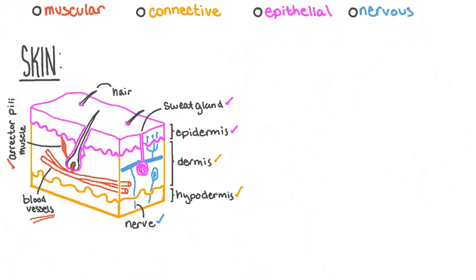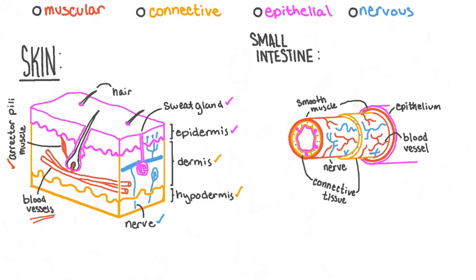This diagram represents a section of the small intestine. We can see that it consists of many layers of muscular tissue and connective tissue. The small intestine is lined inside and out with epithelial tissue, and it contains a network of nervous tissue in order to monitor and regulate its activity.